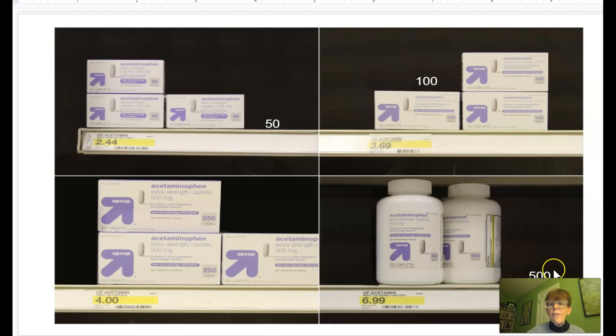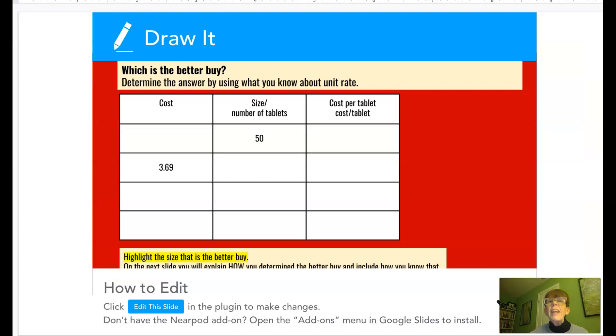This is a 500 tablet size and its price is $6.99. So, you'll be using your unit rate, finding unit rate method, and you will be determining the cost per tablet for each one of these sizes, and then highlighting which one is the best buy.